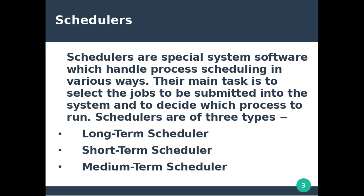Scheduling is to select the jobs to be submitted into the system and to decide which process to run. In a computer system with multiple jobs — multiple processes, multiple programs — the scheduler determines which programs can run.